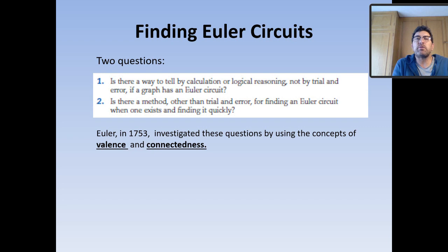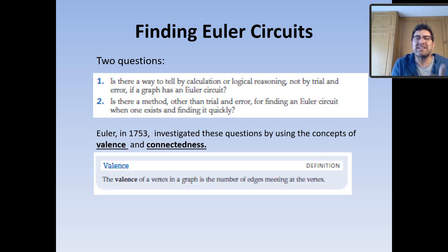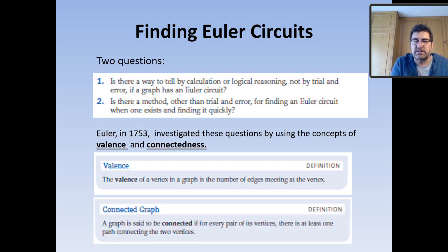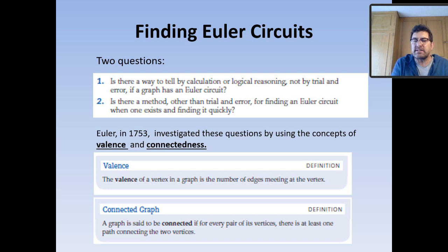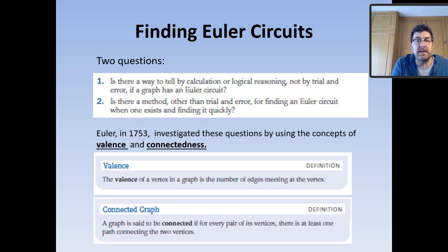The valence — up to this point we've used the term 'degree of a vertex'; valence is another word for that. Connectedness tells us if all the vertices on a graph are connected to one another. The valence of a vertex is the number of edges that meet at that particular vertex, and connectedness means every vertex is connected to another vertex by an edge.